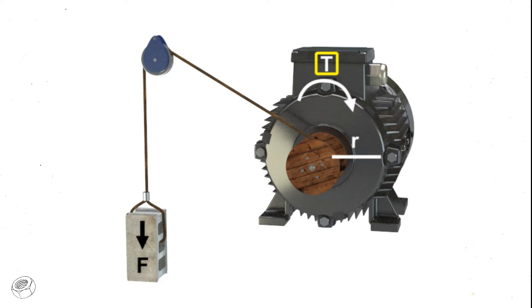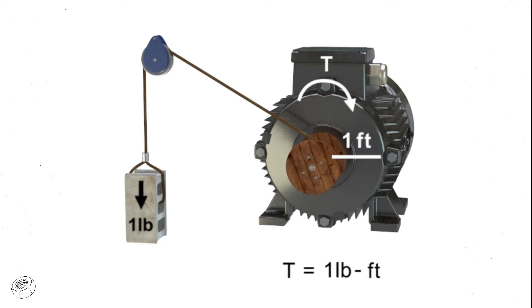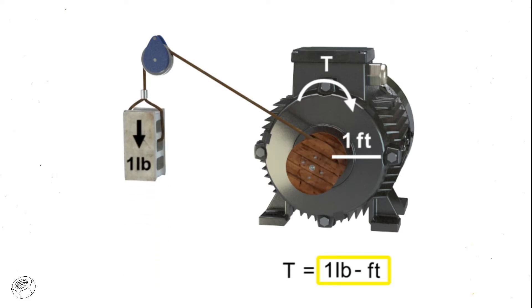Torque is a special type of work that produces rotation. Torque occurs when a force acts on a radius. Typical units of measurement for torque are pound-foot. The torque illustrated here is equal to one pound-foot.